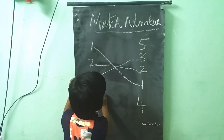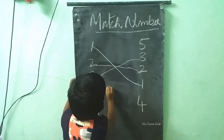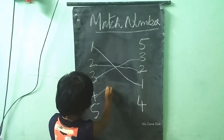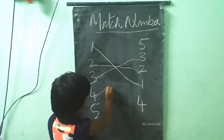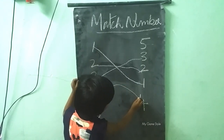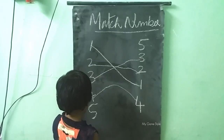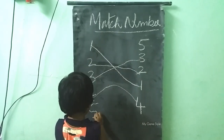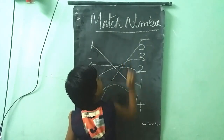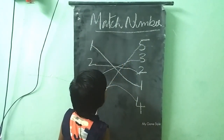4. Where is 4? C first. Yes. Next. 5. Where is 5? Ok.